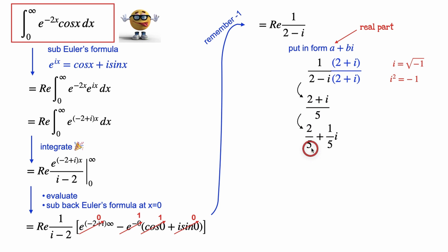And we can split this up into two happy fractions with the same common denominator. And my friends, we've now got the real part right here, which is the answer to our integral right here. So that's what we want, the integral of e to the negative 2x cosx from 0 to infinity is 2 divided by 5.